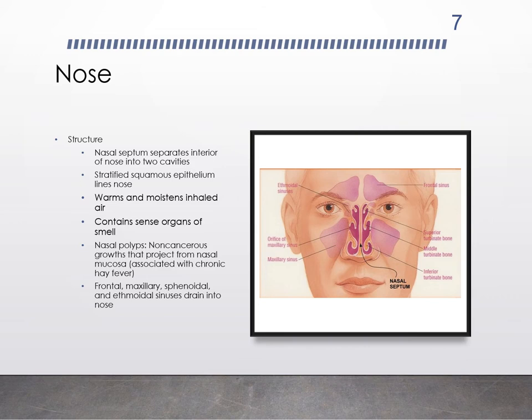Inside the nose is divided into two parts by a septum — a right and left cavity — and it is lined with stratified squamous epithelium. It contains our sense of smell. The lining of the nose is very vascular and contains olfactory nerves. Some conditions that can occur inside the nose include nasal polyps, which are non-cancerous redundant growths from the mucosal lining that can be removed; chronic inflammation can be a cause of their development.